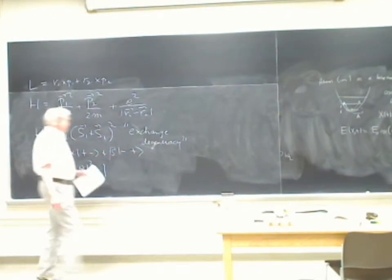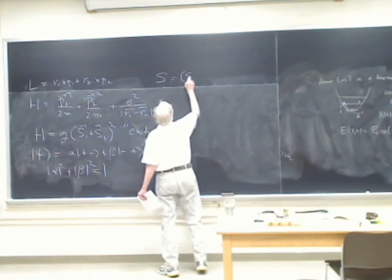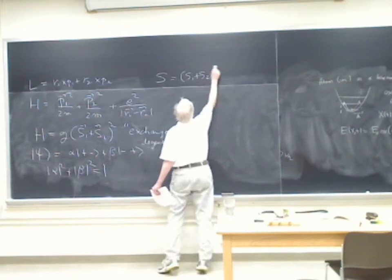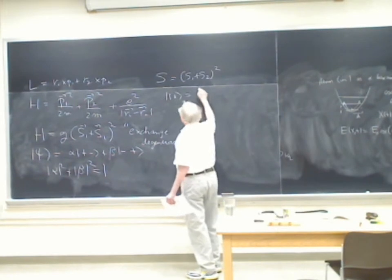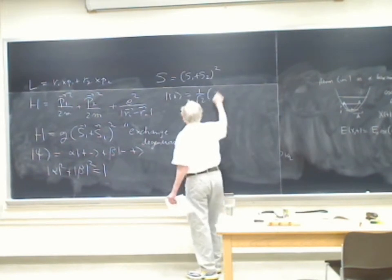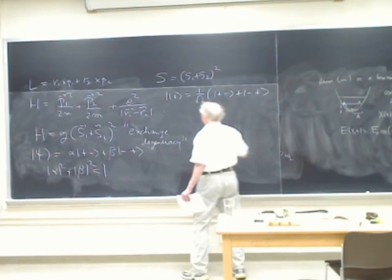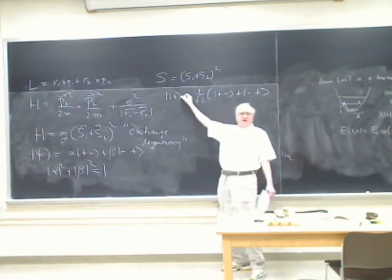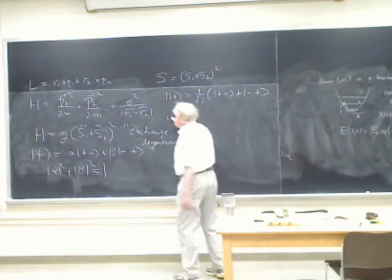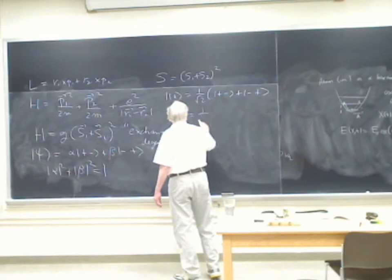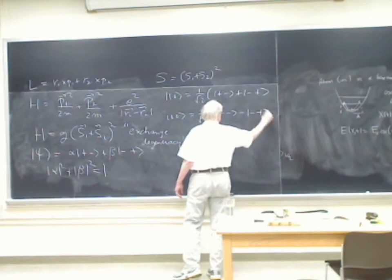We know what the eigenstates are of S, which is S1 plus S2 squared. There's the triplet state, which is 1 over root 2 times (plus-minus plus minus-plus) — this is the triplet state with z-component 0. And then there's the singlet state, which is 1 over root 2 times (plus-minus minus minus-plus).